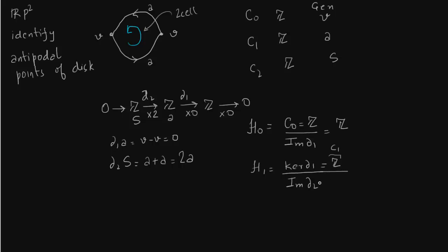What is image of delta 2. Delta 2 takes Z and multiplies it by 2. So we have 2Z. So that is what we get.